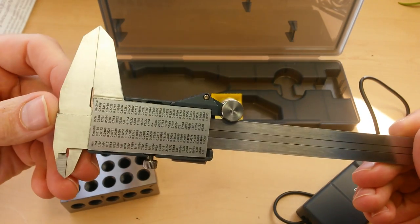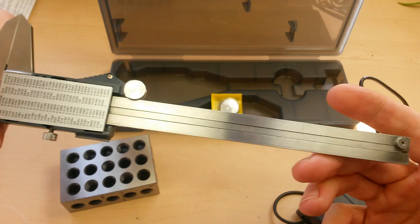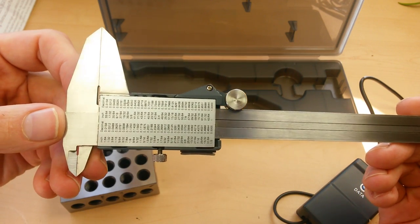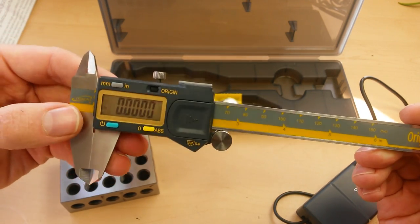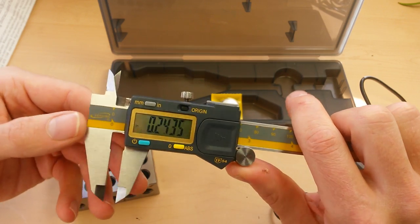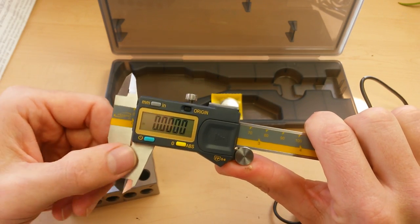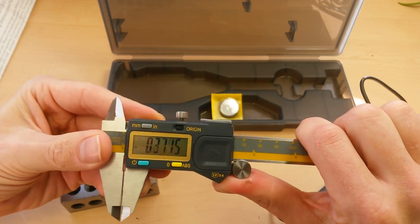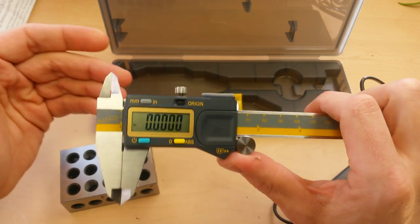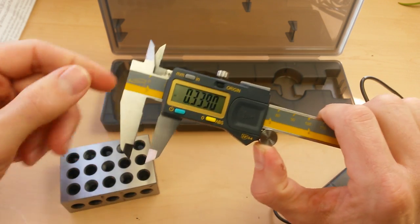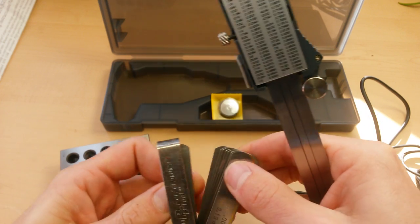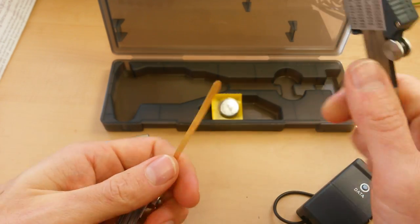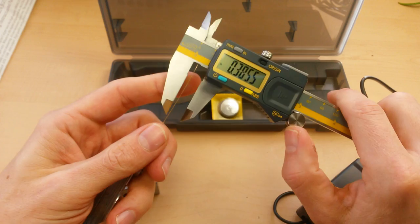In terms of performance across the entire average data set, it performed just slightly different than the Mitutoyo. In fact, compared to the differences between these two and the rest of the calipers in the series, you could almost call the difference negligible. So it's right on par with the Mitutoyo. In terms of total variance or accuracy across the measuring face, it performs right on par with the Mitutoyo.